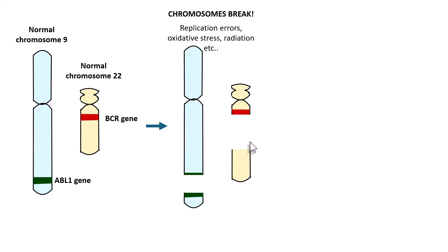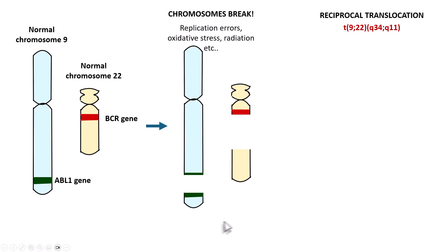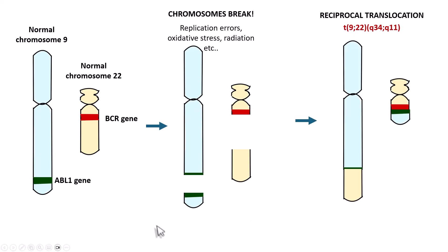But in the case of chronic myeloid leukemia, something else happens — that is reciprocal translocation. Reciprocal translocation from chromosome number 9 to chromosome number 22 and vice versa, chromosome 22 to chromosome number 9 — that is why it is called reciprocal translocation. What happens is that the part of the chromosome with the ABL1 gene gets fused into the chromosome with the BCR gene, forming the BCR-ABL1 fusion gene on a shortened chromosome. This is also referred to as the Philadelphia chromosome.